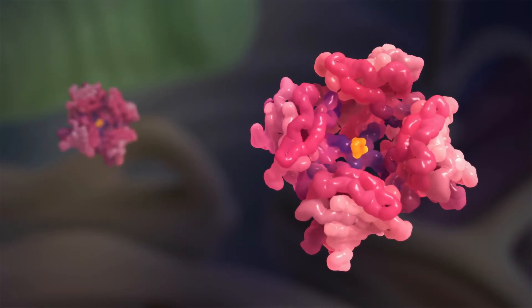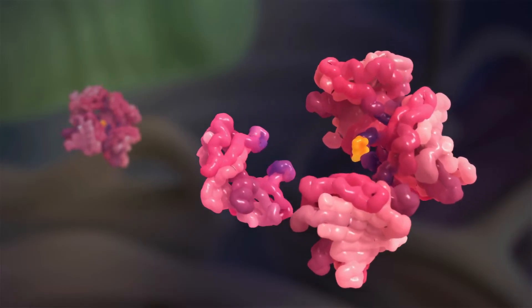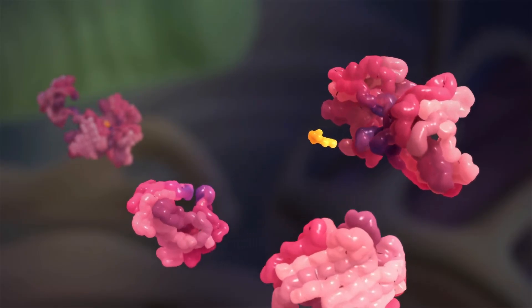In ATTR amyloidosis, the four-unit complex is made up in the normal way but is unstable and prone to breaking up.